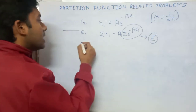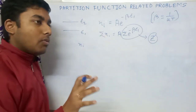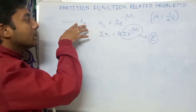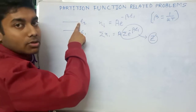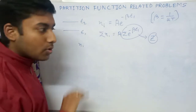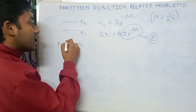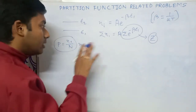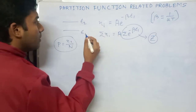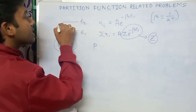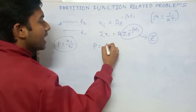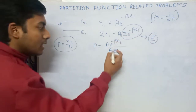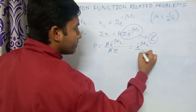If you are asked to find the number of particles or fraction of particles for any given state, or the probability of finding a particle in, say, the second excited state epsilon_2, the probability is n_i divided by the total number of particles. The constant A cancels out, giving e to the power minus beta epsilon_2 divided by z.